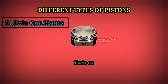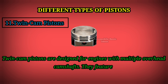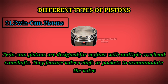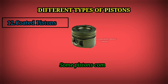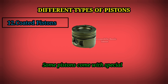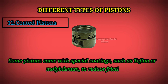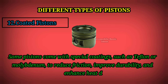Twin cam pistons: Twin cam pistons are designed for engines with multiple overhead camshafts. They feature valve reliefs or pockets to accommodate the valve motion. Coated pistons: Some pistons come with special coatings, such as Teflon or molybdenum, to reduce friction, improve durability, and enhance heat dissipation.